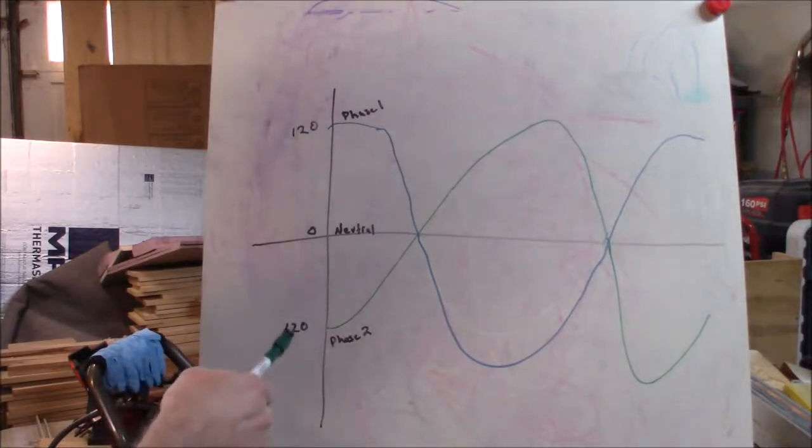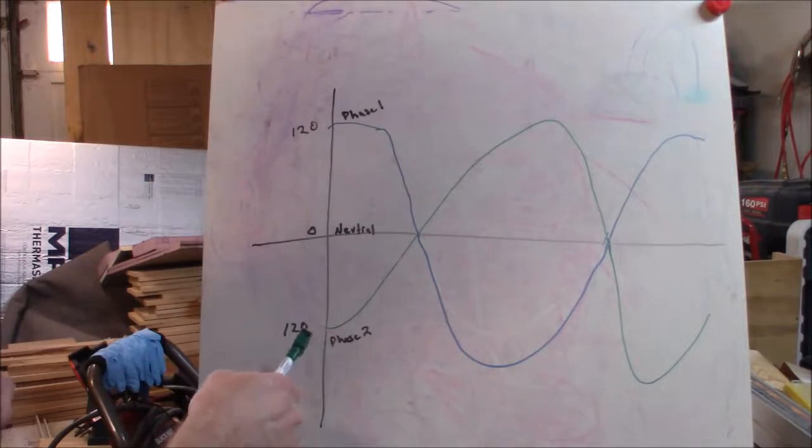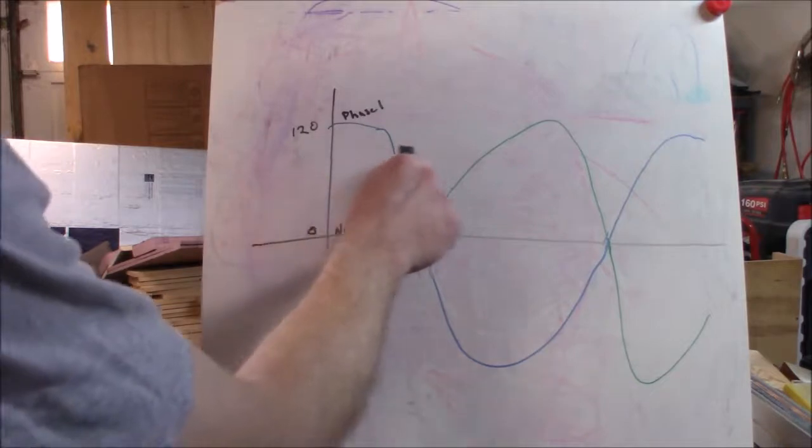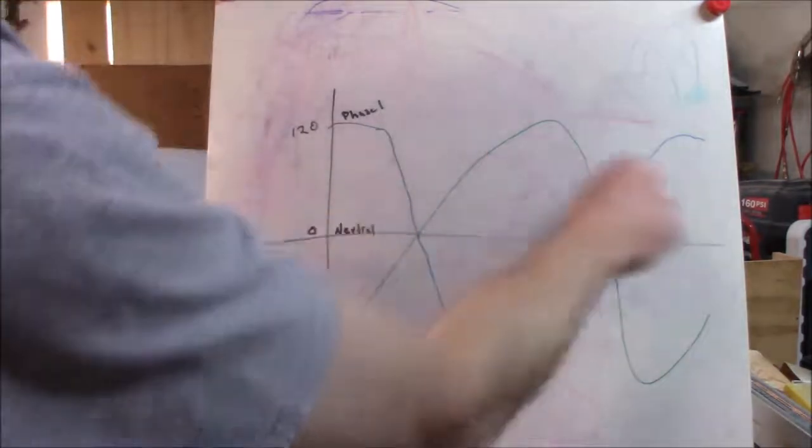Whether you want to call it 110 or 120, unless you're an electrician or an electrical engineer it's not going to matter. It's really whether you're measuring peak or whether you're measuring the root mean square or the true average as though it were DC power.